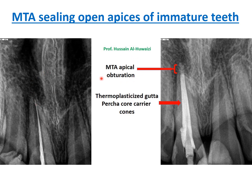That is why an MTA apical plug of approximately two to three millimeters in the apical region is important. Then we obturate the main canal with traditional obturation types, like the core carrier shown here. This ensures the apical region has an alkaline filling material to assist in osseous formation and healing, and even if extrusion happens, it is totally biocompatible.